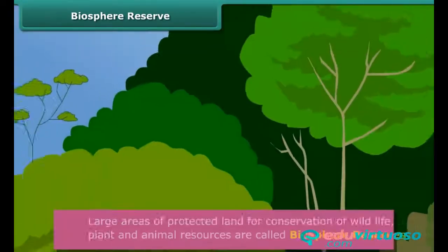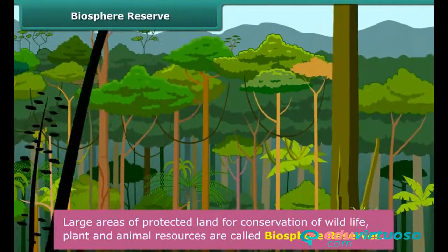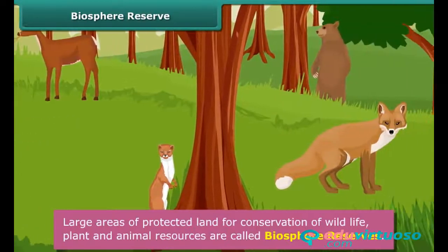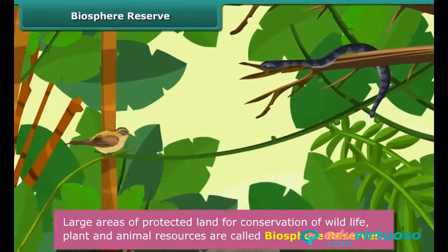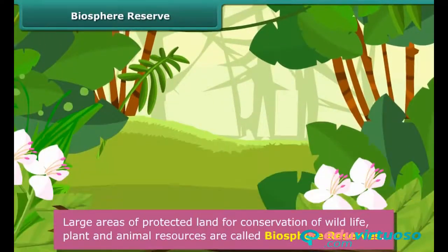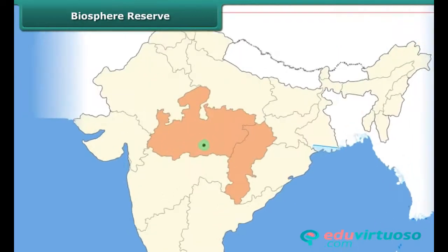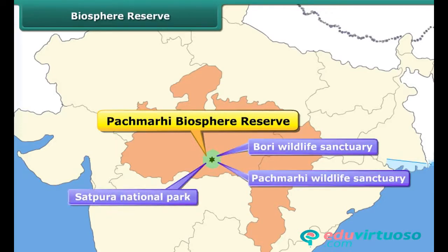Let us now look at a biosphere reserve. Large areas of protected land for conservation of wildlife, plant and animal resources, and traditional life of the tribals living in the area are called biosphere reserves. These help to maintain the biodiversity and culture of an area. A biosphere reserve may also contain other protected areas within it. For example, the Pachmari Biosphere Reserve consists of one national park named Satpura and two wildlife sanctuaries named Bori and Panchmari.